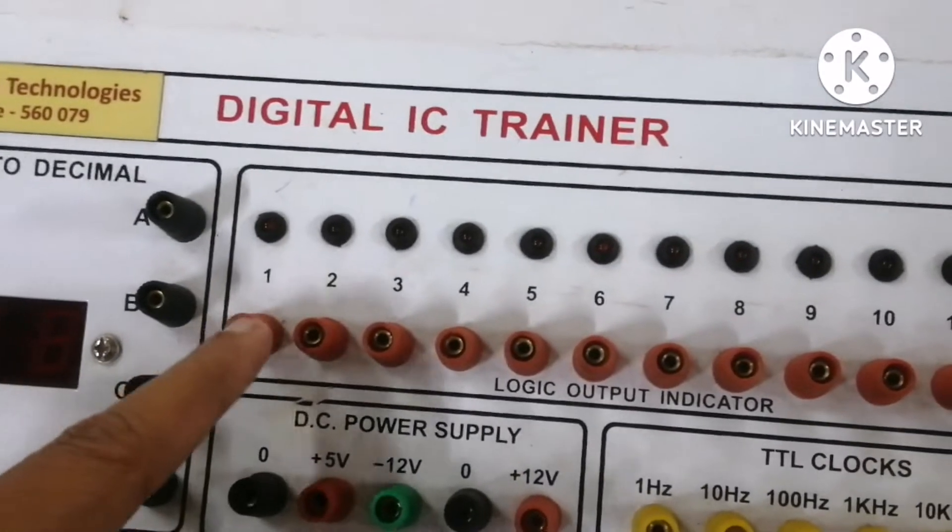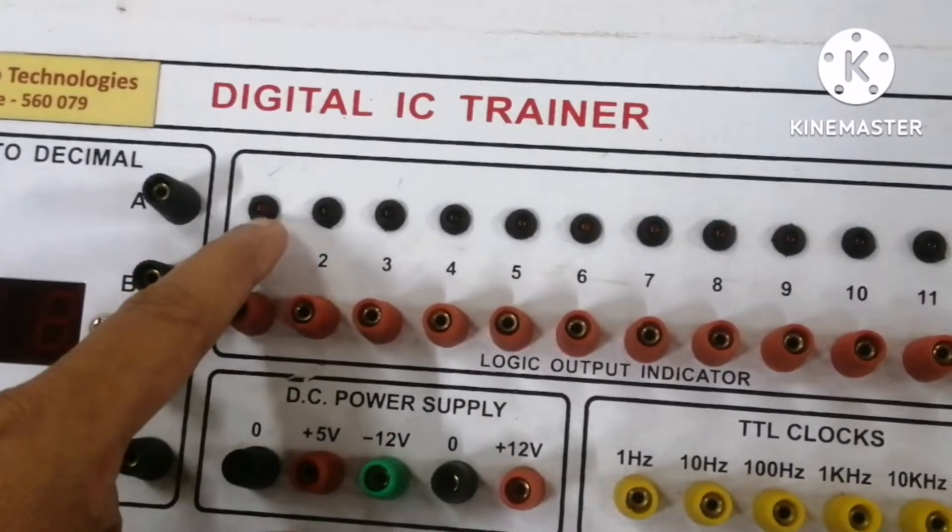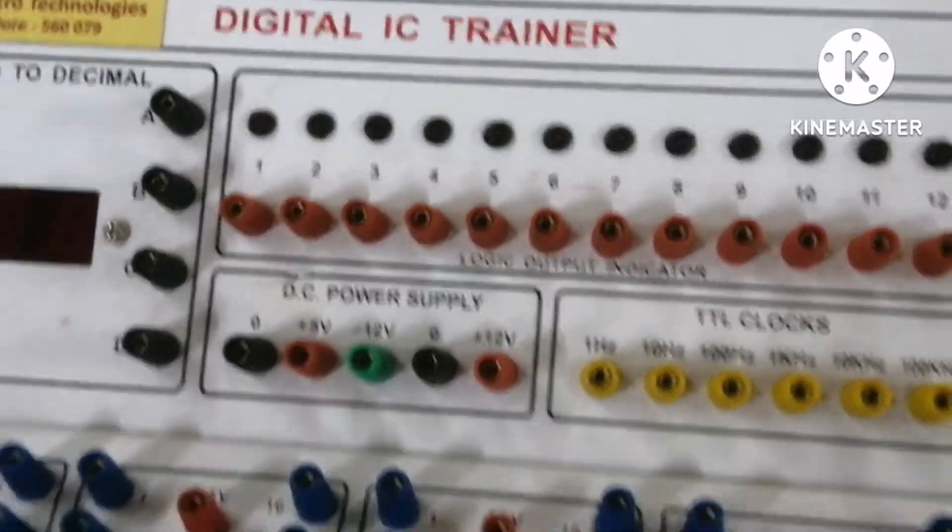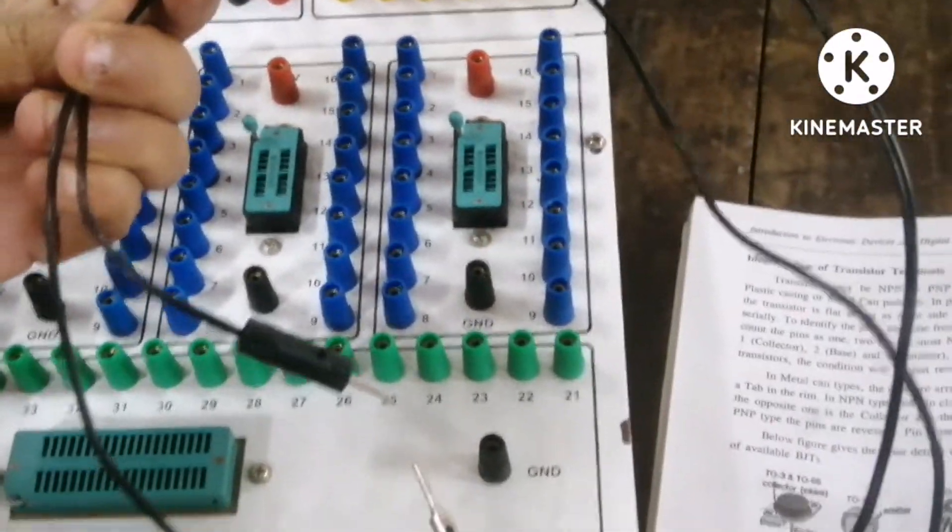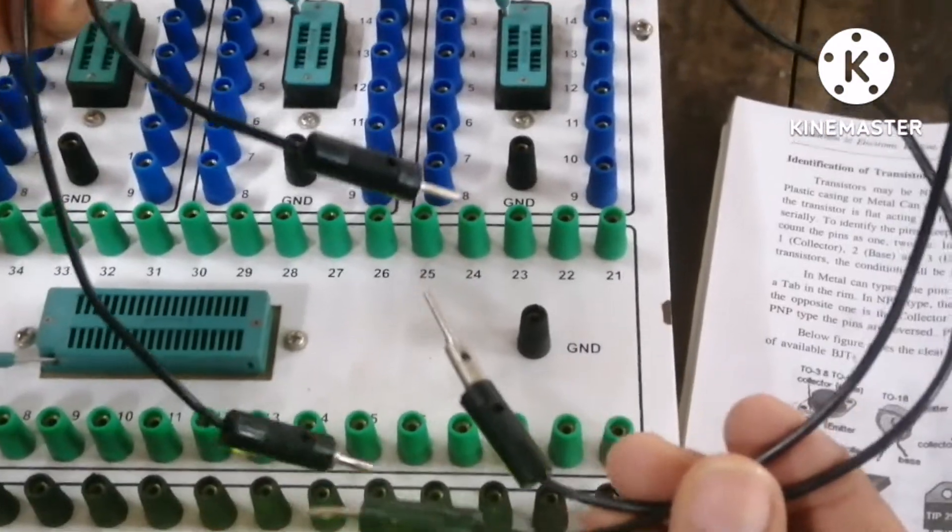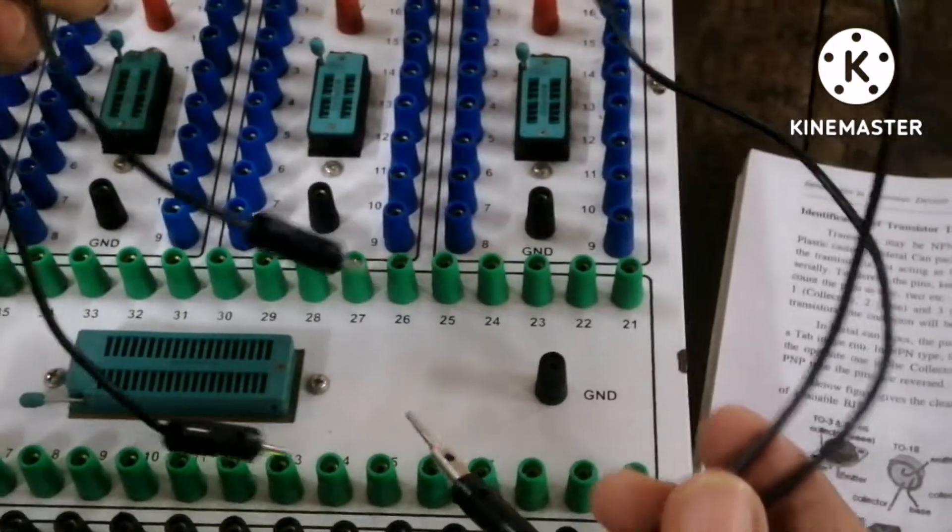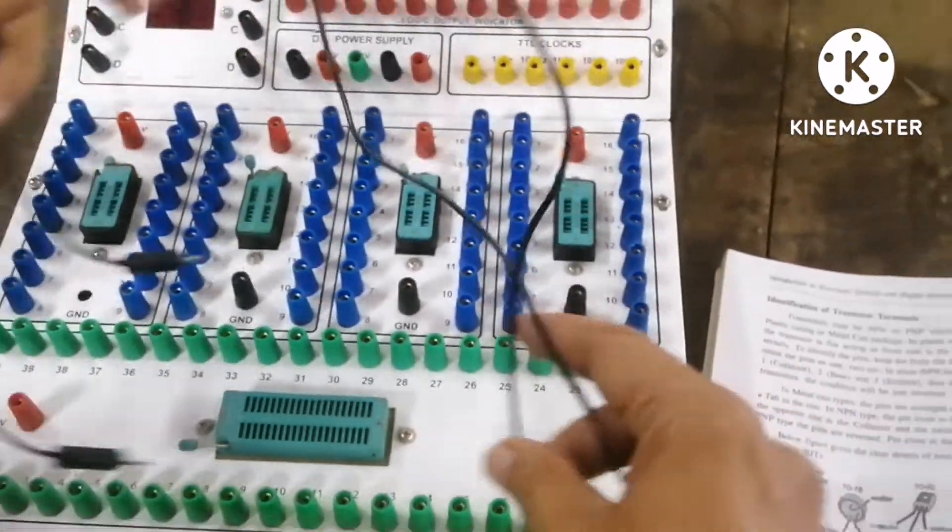Once it is high, it shows a red light. I will show you with the help of the connectors, these are also called patch cords. With the help of the patch cord only we should connect the circuit.